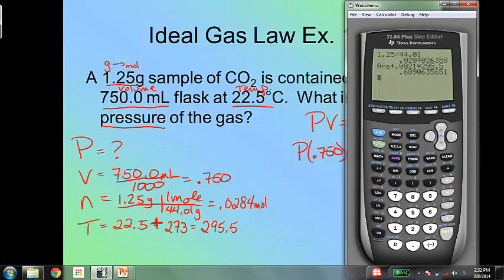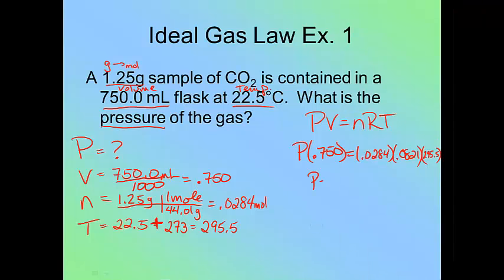Now, that's everything on the right, the nRT. Now I'm going to divide by everything that's on the left, and so I divided that by 0.75, and so the pressure is 0.919. So my P comes out to be 0.919.